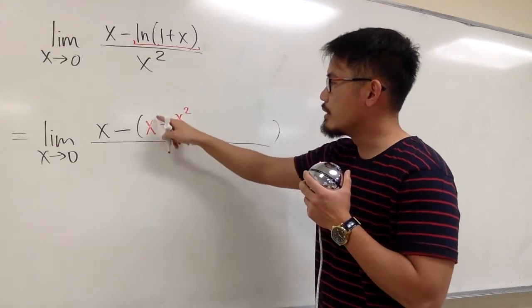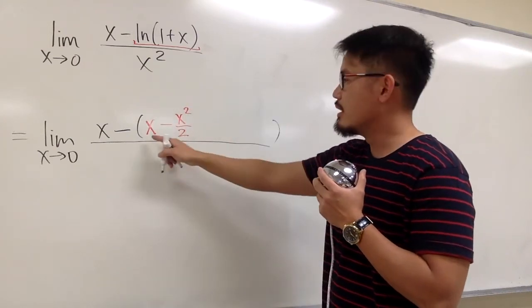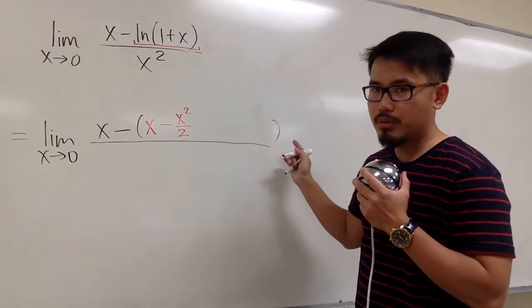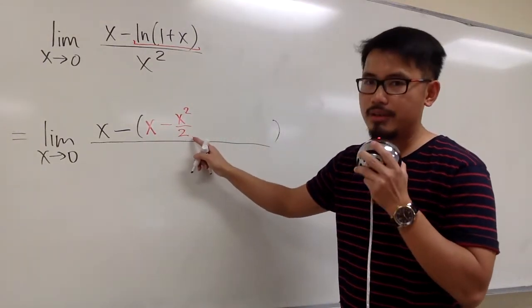You will see all the powers 1, 2, 3, 4, 5, and on the denominator it's going to be 1, 2, 3, 4, 5 as well. There's no factorial in the denominator.